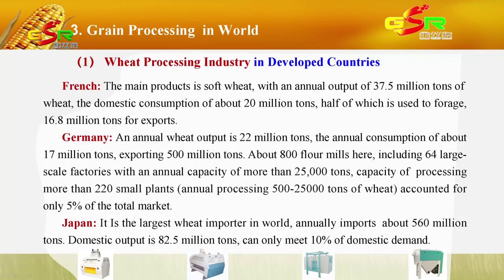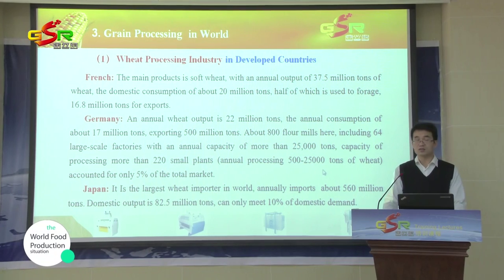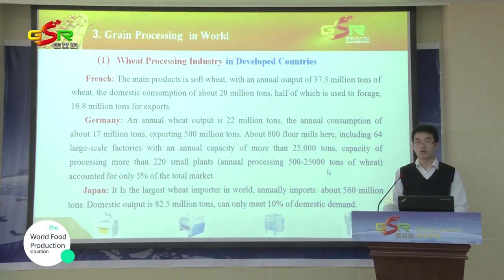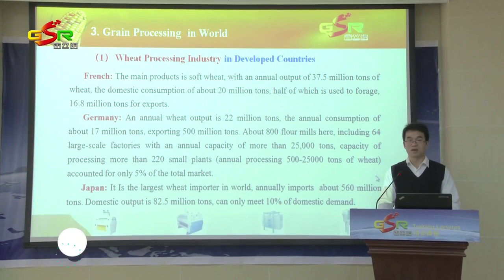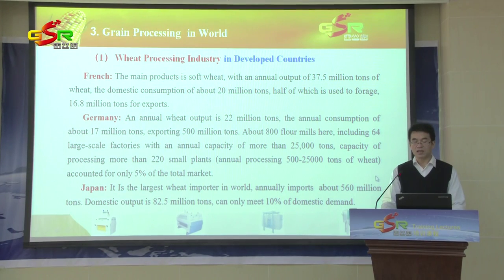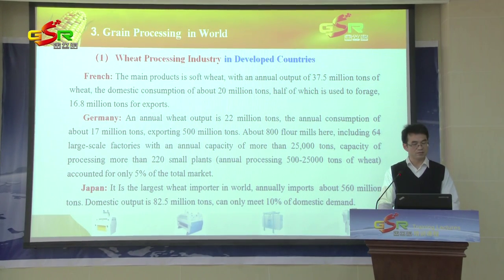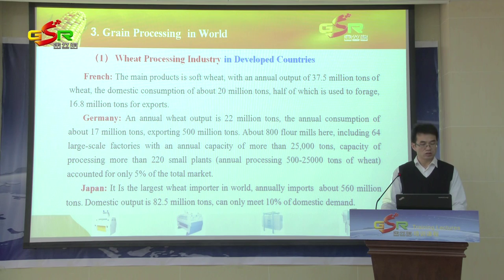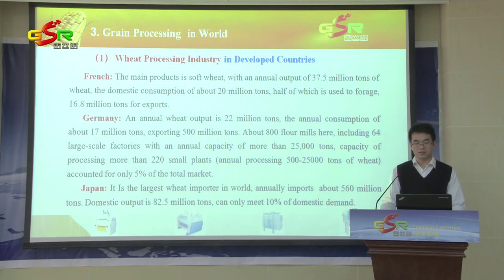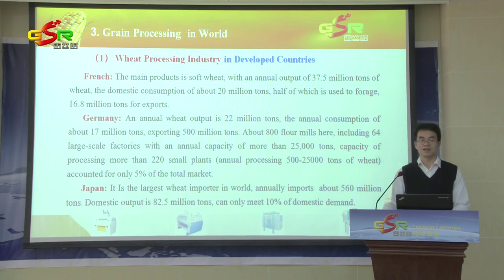This picture shows information about the wheat processing industry in France, Germany, and Japan. Japan is the largest wheat importer in the world. Annual imports are about 560 million tons, while domestic output is only 83 million tons, which can only meet 10% of its demand.